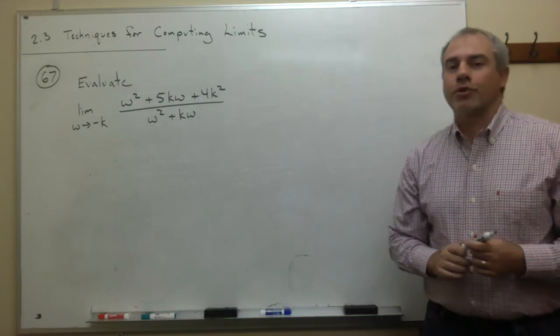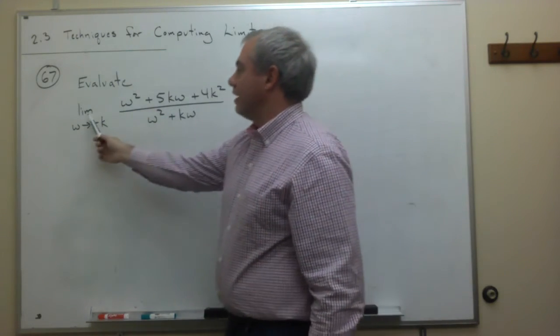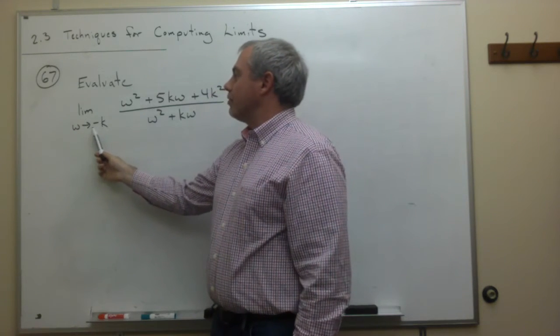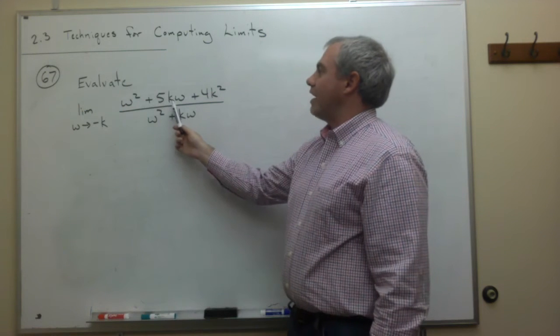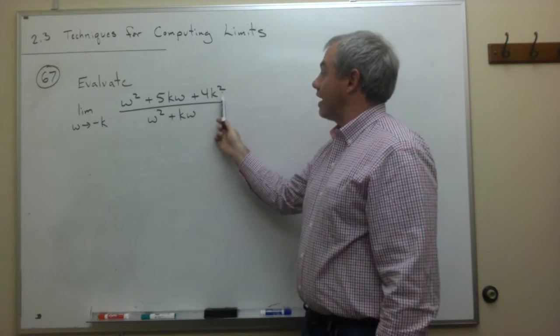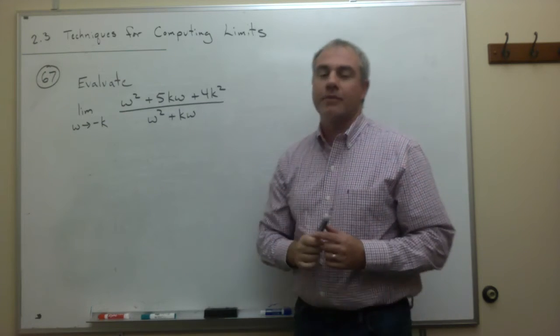In this next problem, we're going to look at the following. We'd like to evaluate the limit as w goes to negative k of w squared plus 5kw plus 4k squared divided by w squared plus kw.